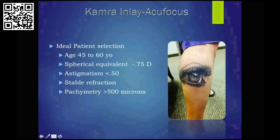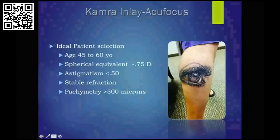The ideal patient I'm seeing for inlays is going to be between the ages of 45 to 60. For target and optimization, I'd like to see the camera inlay at minus 0.75 for myopic patients and minus 1.00 for hyperopic patients — this is pre-camera. Astigmatism less than half a diopter. I look for stability in refraction and corneal thicknesses of 500 microns or greater.